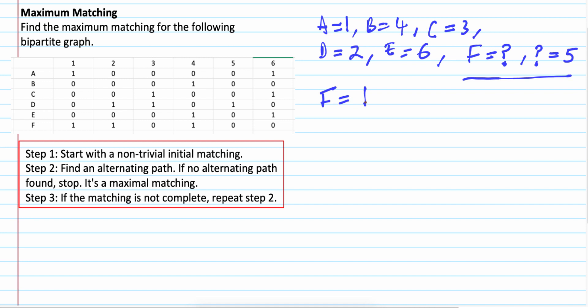So 1 is actually belongs to A. So F to 1. So 1 to A. So A has to take another task. In this case, 6. Okay. A, we assign 6 to A. But 6 belong to E.